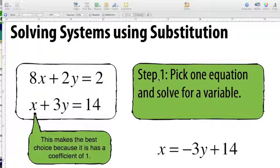You can see here we've been given 8x plus 2y equals 2, and x plus 3y equals 14. Both these are linear equations.